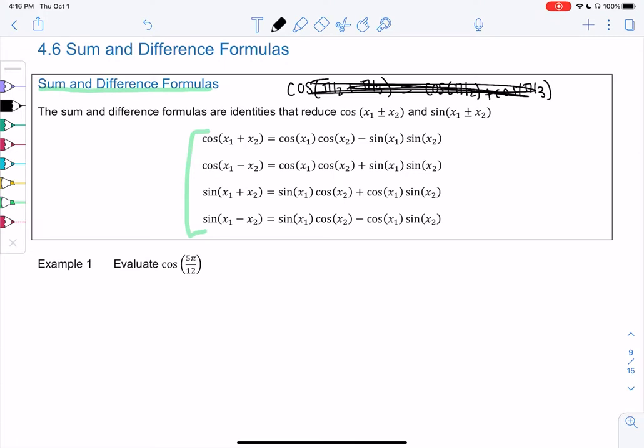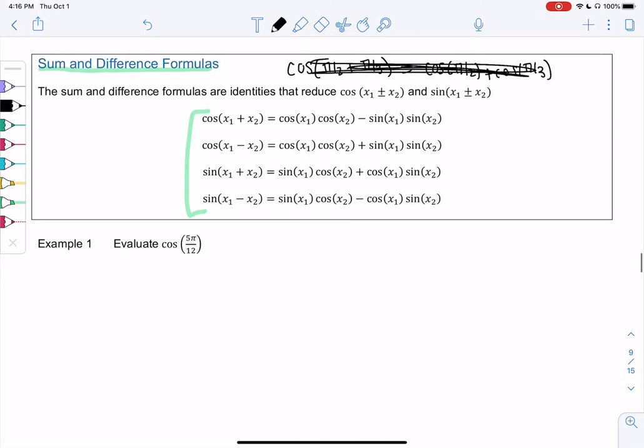So it's a little messy, so let's just mess with it. So cosine of 5 pi over 12. That's something we don't know how to do, right? We don't know over 12 on the unit circle, so I'm going to try to rewrite it as two fractions that we do know.